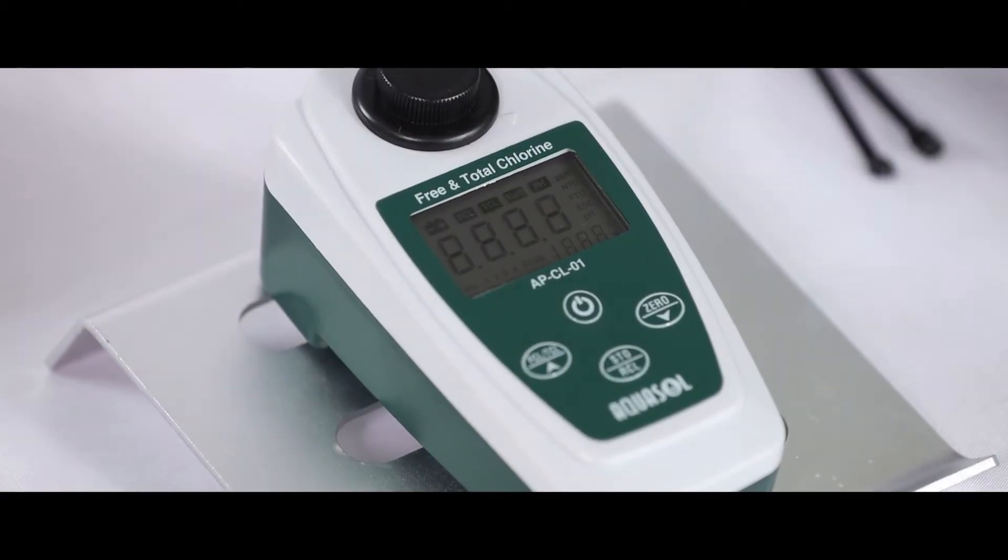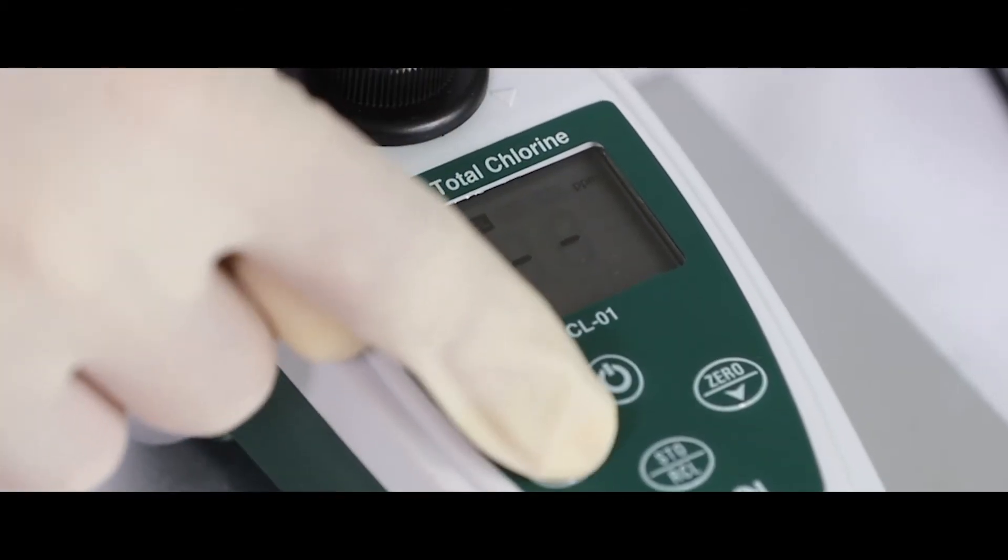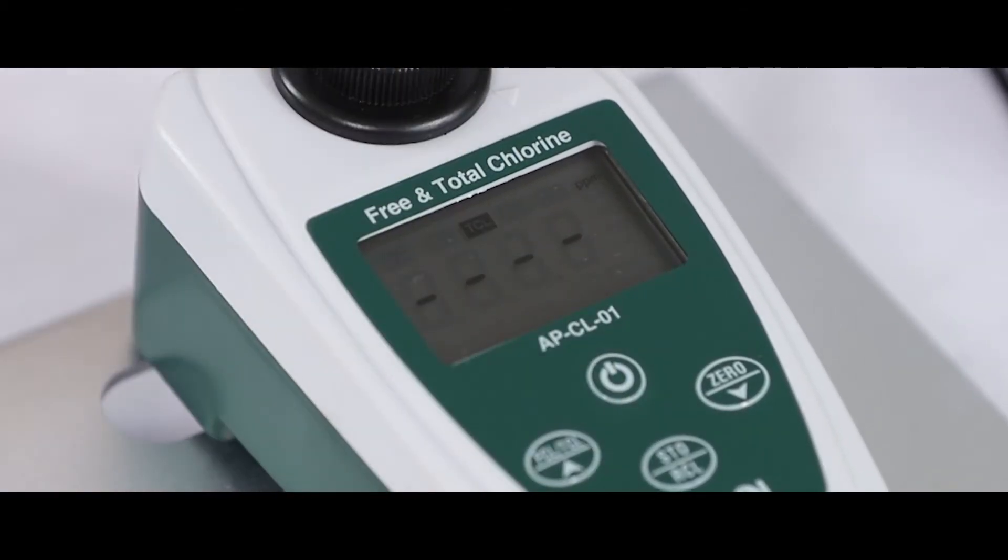Press the power button to switch on the meter. Press FCL slash TCL button to change the mode.